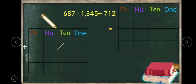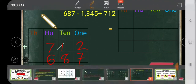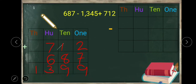First we add seven hundred and twelve to six hundred and eighty seven. Seven is in the hundreds column, one in the tens column, two in the ones column. Six hundred and eighty seven plus seven hundred and twelve — we can write them either way. Seven plus two is nine, eight plus one is nine, six plus seven is thirteen, so we write three and carry one. The total is one thousand three hundred and ninety nine.